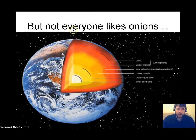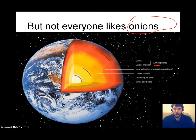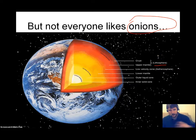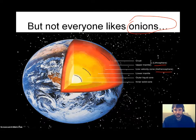Remember the earth has many different layers, just like Shrek does. You've got the crust and the upper mantle. Together, those are often called the lithosphere, which is technically just under the crust — that really top part of the mantle that's still really hard and rock-like. And then below that you have the asthenosphere.